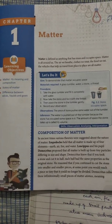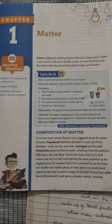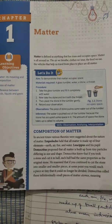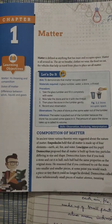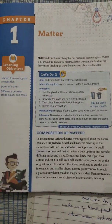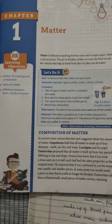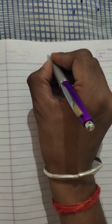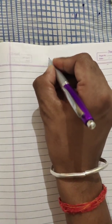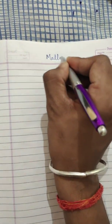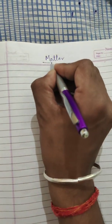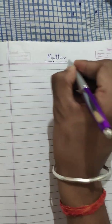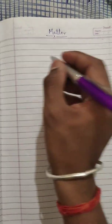Good morning students. Today in this video, we are going to start the first chapter of physics for class 6, and the name of the chapter is Matter. In chemistry also you will study about matter. First we will discuss the definition of matter.